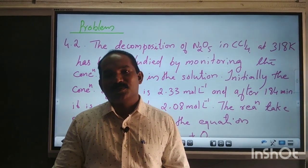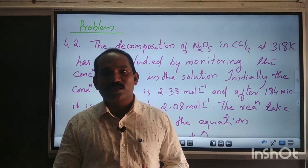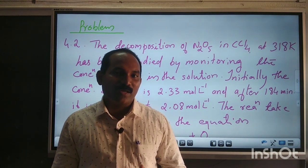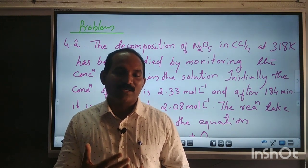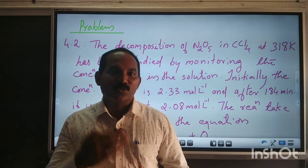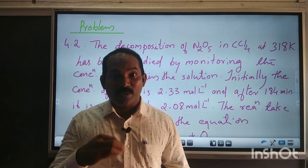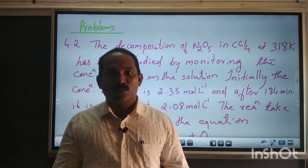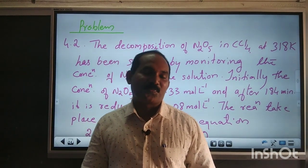I think you remember the equations. Consider the general equation: A moles of A plus B moles of B gives C moles of C and D moles of D. The rate is equal to minus 1 over A, times the change in concentration of A divided by change in time — that is minus (1/A)(ΔA/Δt) — equal to minus (1/B)(ΔB/Δt) equal to plus (1/C)(ΔC/Δt) equal to plus (1/D)(ΔD/Δt).